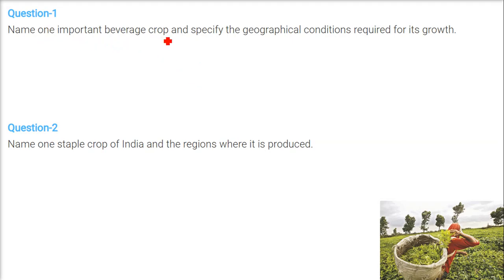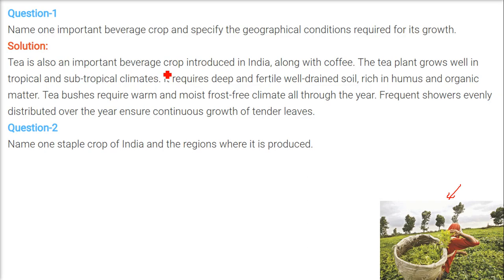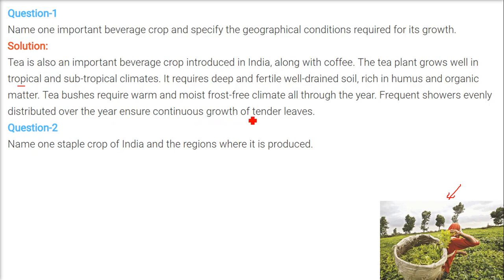Name one important beverage crop and specify the geographical conditions required for its growth. We will talk about tea here. Tea is an important beverage crop, very popular in India — everyone drinks tea along with coffee. The tea plant grows well in tropical and subtropical climates. It requires deep and fertile well-drained soil, rich in humus and organic matter. Tea bushes require a warm and moist frost-free climate all through the year. Frequent showers evenly distributed over the year ensure continuous growth of tender leaves.